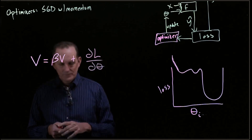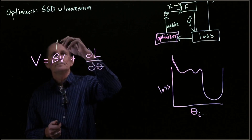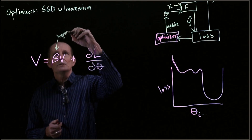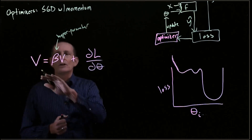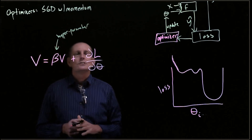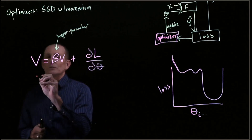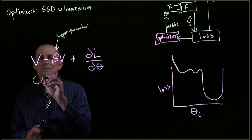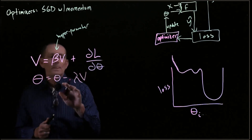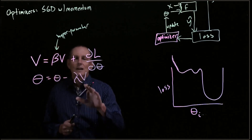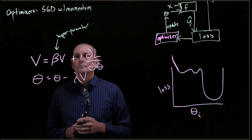Beta is a hyperparameter between 0 and 1. If beta is 0, then v is just equal to the gradient. After we've done this, we update theta based not on the gradient itself, but based on the velocity.